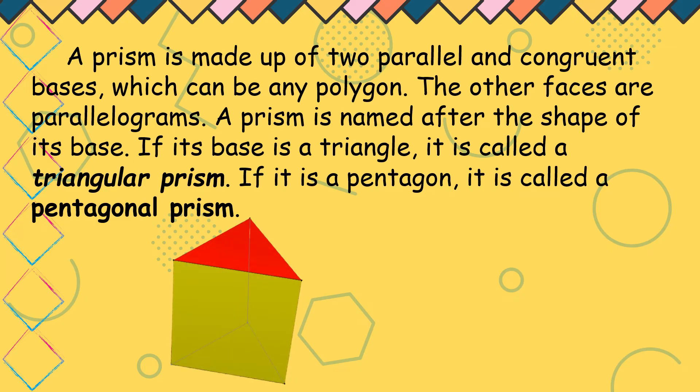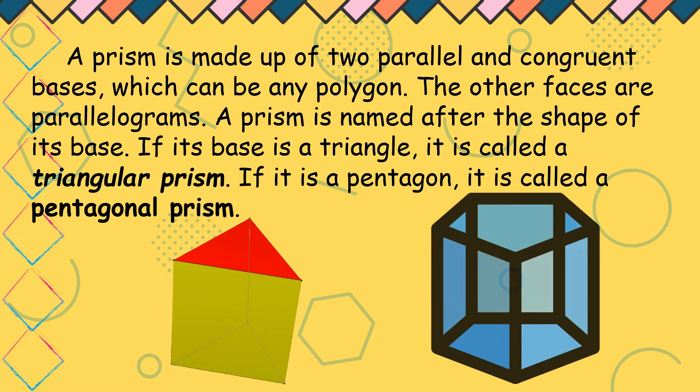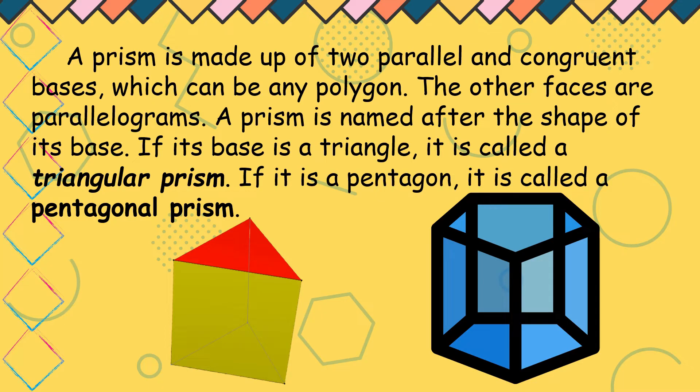These are the examples. Dahil ang nasa ilalim niya, this is a prism. Triangular prism. Ito din naman ay pentagonal prism. Kung makikita natin ang faces nito ay polygon. Itong green ay square. Then, the next is triangle. So, may nabubuo tayong polygon. Example na itong pangalawa, the second one. Pentagonal kasi yung bases niya ay nasa ilalim. We have five sides or five edges.